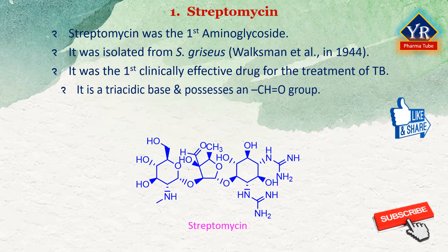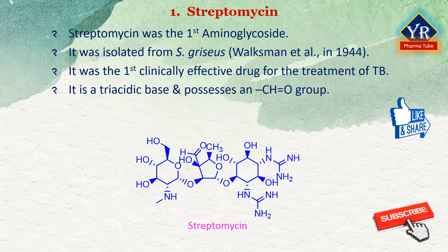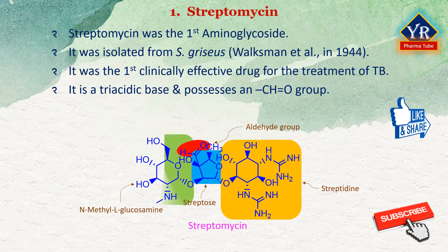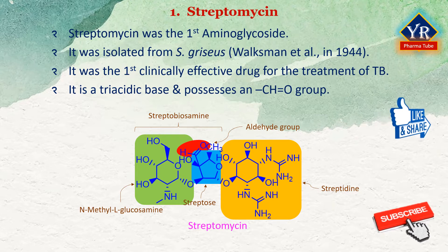Streptomycin is chemically a triacidic base and possesses an aldehyde carbonyl group. The three structural units of the aminoglycoside are streptidine, streptose, and N-methyl-L-glucosamine, which are connected through glycosidic linkages. Streptomycin has a role as an antimicrobial agent, a protein synthesis inhibitor, a bacterial metabolite, and an antifungal agrochemical.